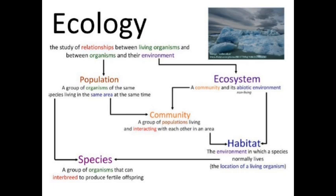The ecosystem is a community and a biotic or non-living environment. The community is a group of populations living and interacting with each other in an area. The area is called a habitat — the environment in which a species normally lives. All these concepts — population, community, ecosystem, habitat and species — are interconnected within ecology.